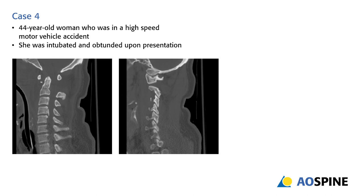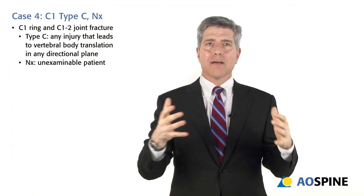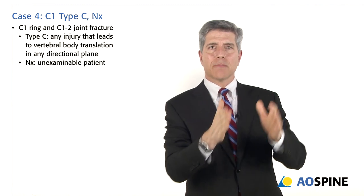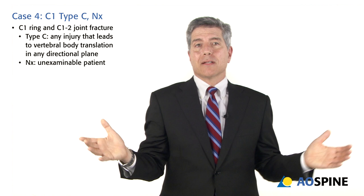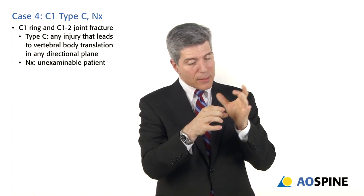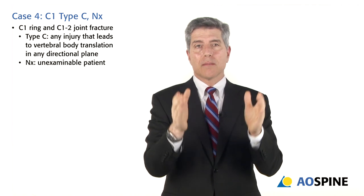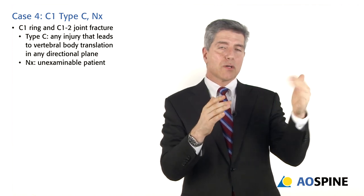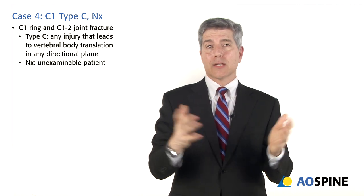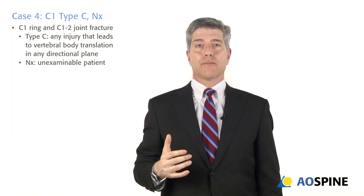Case four: looking closely at this patient, you can see separation between the C1 ring and the odontoid peg — automatic instability. There is disruption at the C1-C2 articulation. That makes it a type C injury. The patient cannot be examined, so the neurologic profile is NX. You see the translation between C1 and C2, the patient can't be examined, and someone would describe it as a C1-C2 type C injury with an NX neurologic profile.